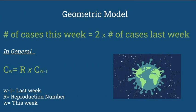So here's the geometric model that we would use to calculate the number of cases this week, assuming everyone passed it on to two people. The equation is, the number of cases this week is equal to 2 times the number of cases last week, and it can also be written as C sub W, which means cases this week, is equal to R, which means reproduction number, times C sub W minus 1, which means cases last week.